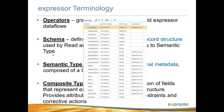A composite type contains a collection of field attributes that represent the Expressor internal record structure. It provides attribute naming, data type selection, constraint rules, error handling, and corrective actions.